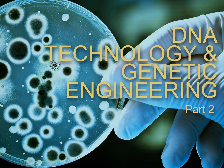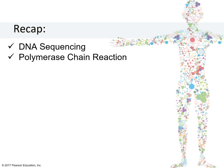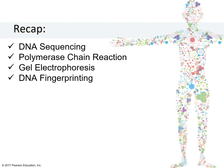This is the second part of our lecture in DNA Technology and Genetic Engineering. Last time, we discussed some methods in DNA technology such as DNA sequencing, polymerase chain reaction, gel electrophoresis, and DNA fingerprinting. We now have an idea on how researchers determine the nucleotide sequence of an extracted DNA, how to make more copies of DNA fragments, and how DNA is used in identifying an individual through DNA fingerprinting.